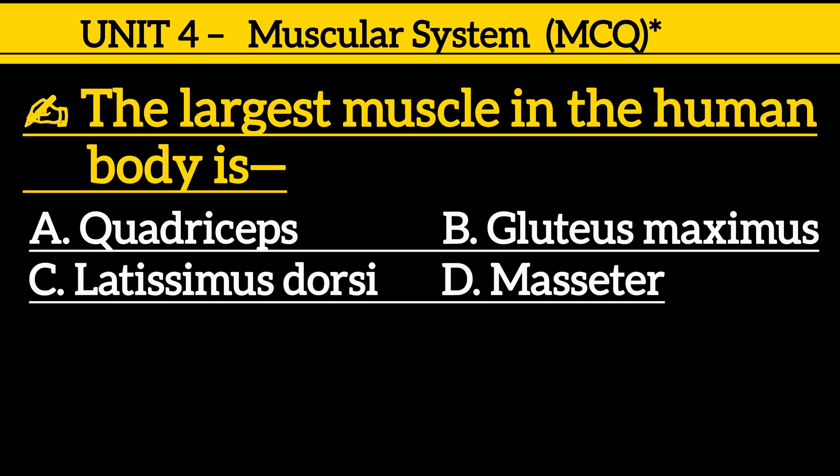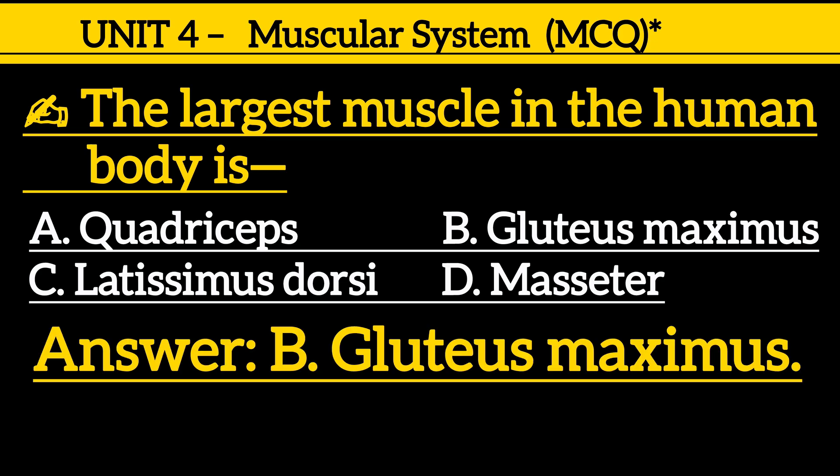Next one is: the largest muscle in the human body is — option A: quadriceps, option B: gluteus maximus, option C: latissimus dorsi, option D: masseter. Correct answer is option B, gluteus maximus.